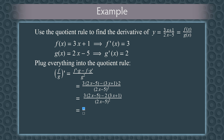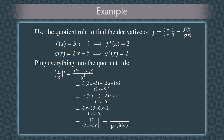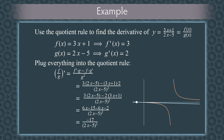3 times (2x minus 5) is 6x minus 15, and negative 2 times (3x plus 1) is negative 6x minus 2. The 6x's cancel, leaving us with negative 17 all over (2x minus 5) squared. The square of a number is always positive, so the denominator is always positive except when x equals 5 halves. The numerator is negative 17, which is negative, so the derivative is always a negative number. Looking at the tangent lines to the graph, you can see they always tilt downwards, so their slopes are always negative. Our answer makes sense.